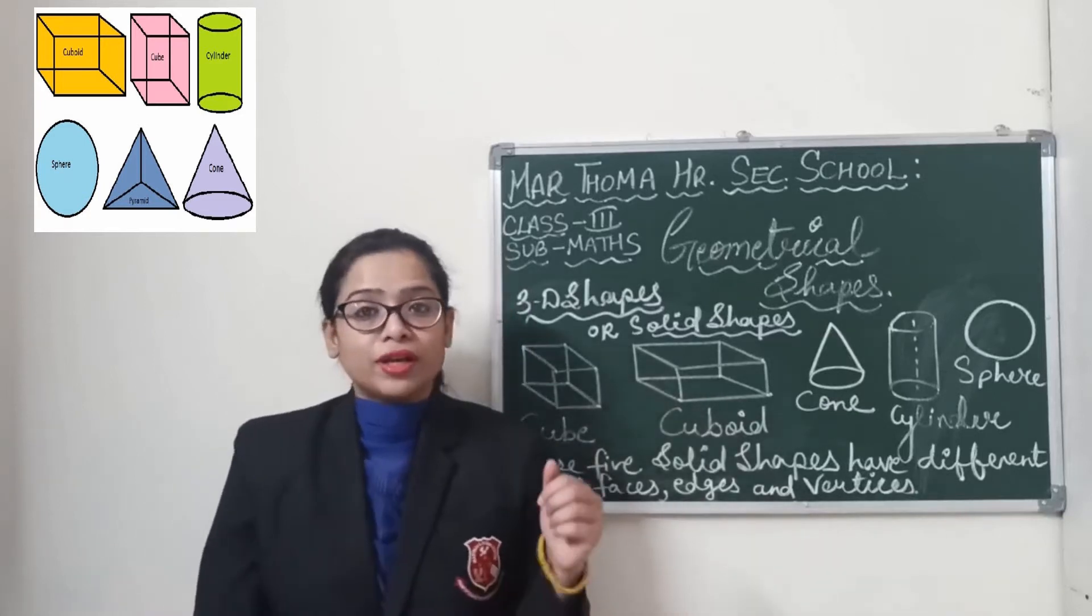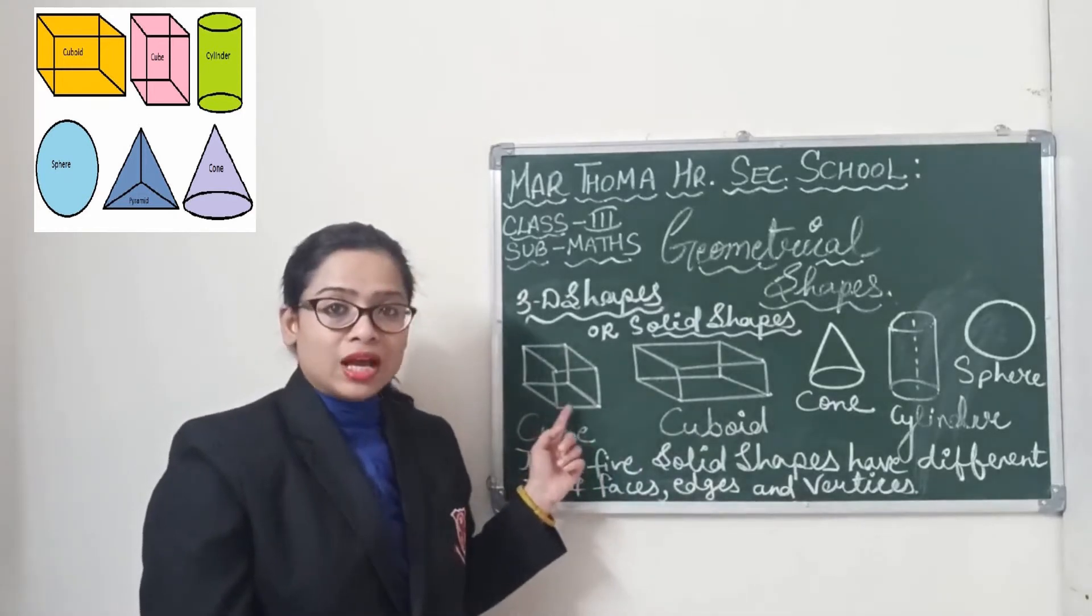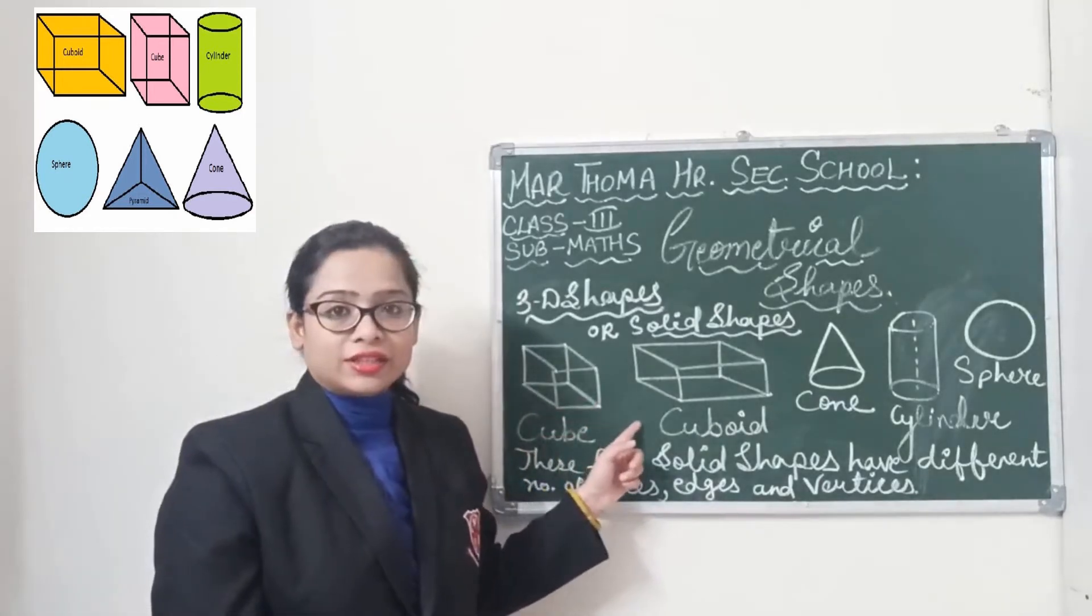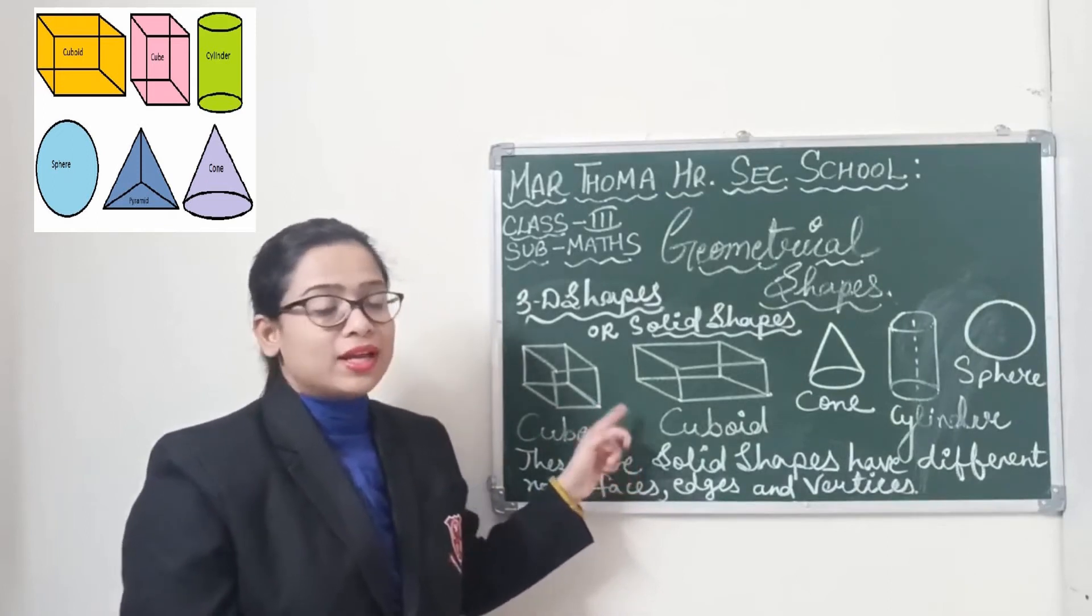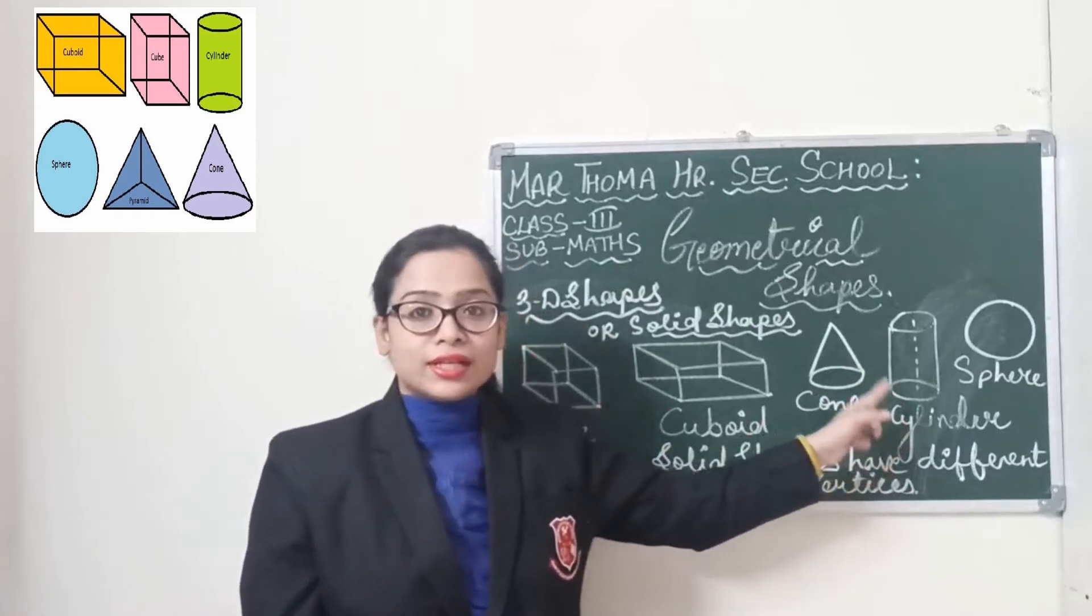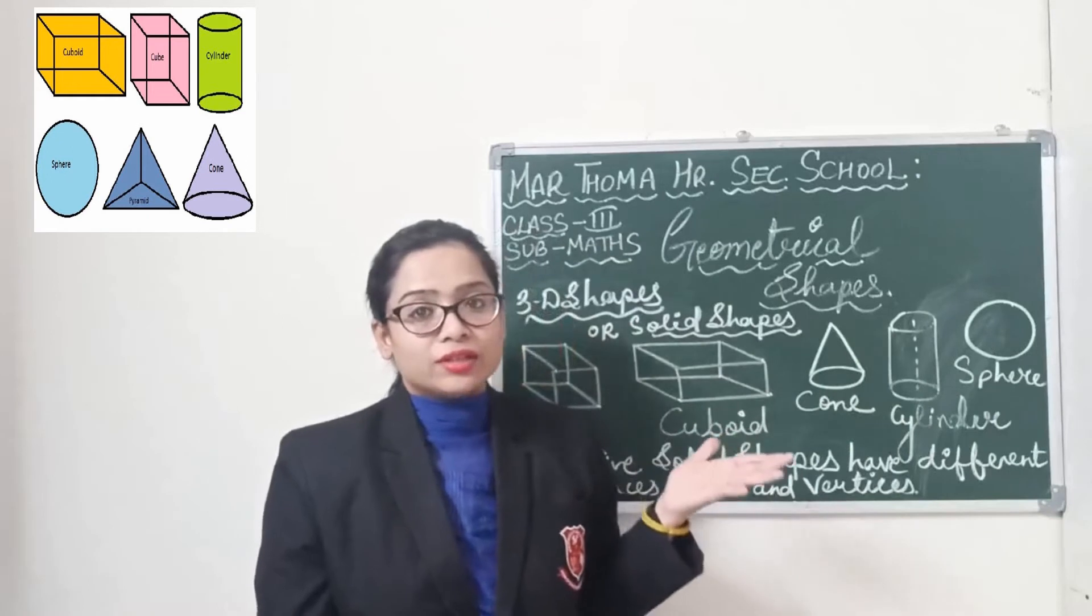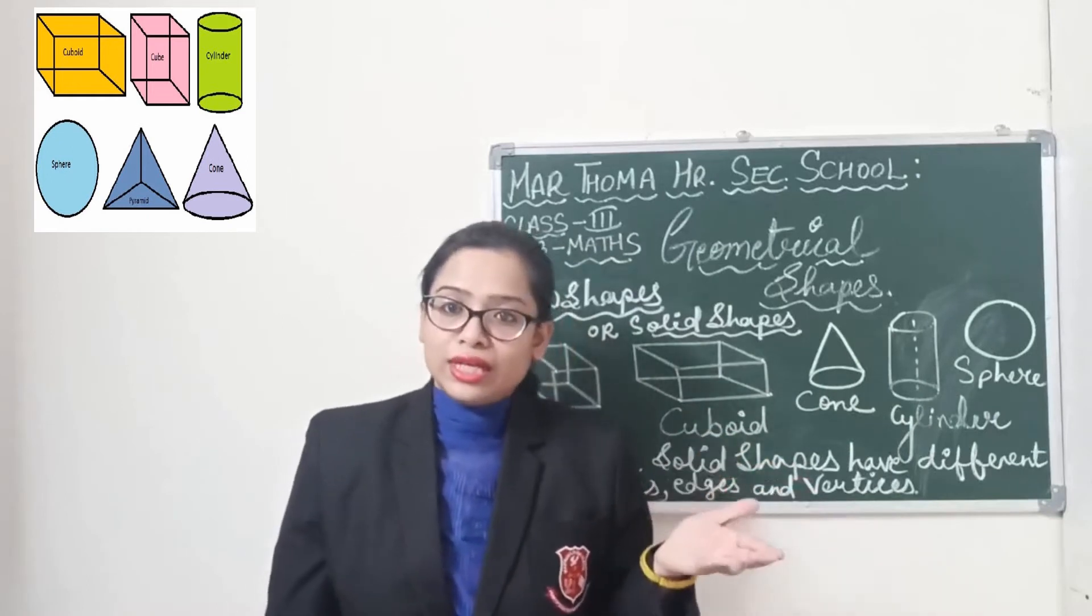You can see here the first figure is cube. This is the shape of cube. And the second figure is cuboid. And the third figure is cone. And the fourth figure is cylinder. The last figure is sphere. These five figures constitute solid shapes.